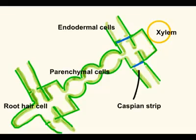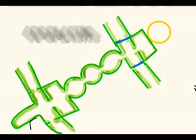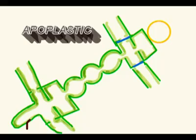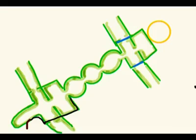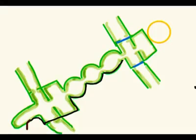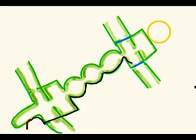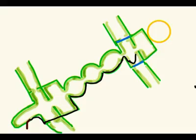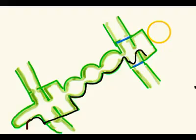In the apoplastic process, water enters the mesh-like structure of the cell walls and continues until it reaches the endodermis. Then it encounters the water-impermeable Caspian strip. As a result, it is driven into the cytoplasm — this is the apoplastic block. It is now under control of the cells, whereas previously it was not.